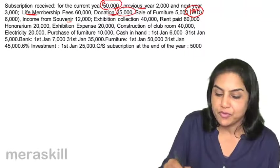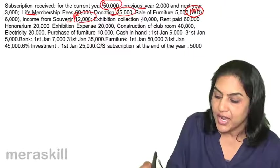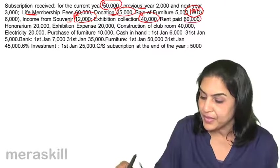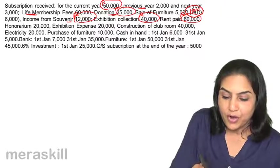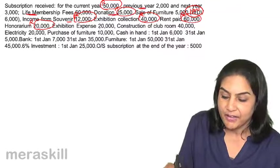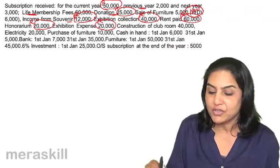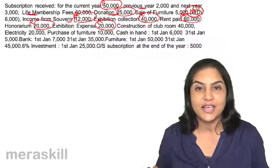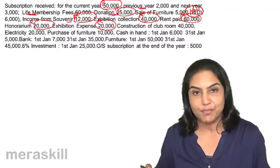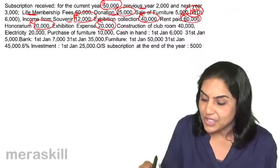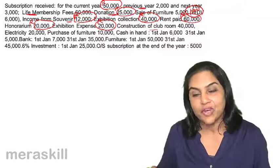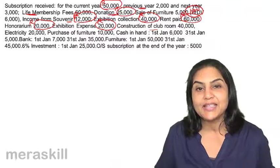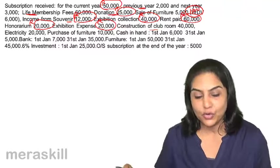Income from souvenir is revenue in nature. Exhibition collection — money from conducting an exhibition — is revenue. Rent paid is revenue. Honorarium and token salary are revenue. Exhibition expense: 40,000 less 20,000 gives 20,000 net income from conducting the exhibition, and we will take this to the income and expenditure account. But construction of a club room is capitalized and will go to the balance sheet, as its benefit will be received for a long period of time — it is an asset.